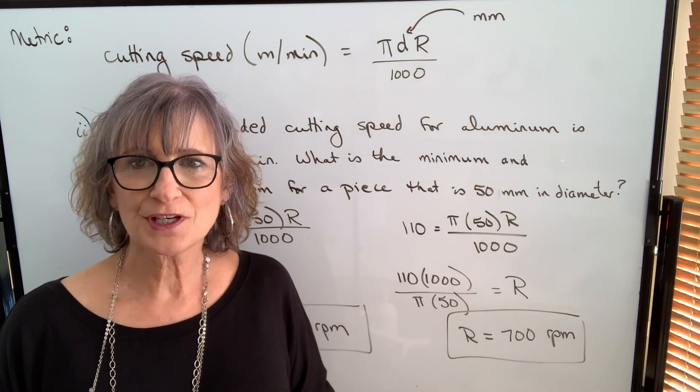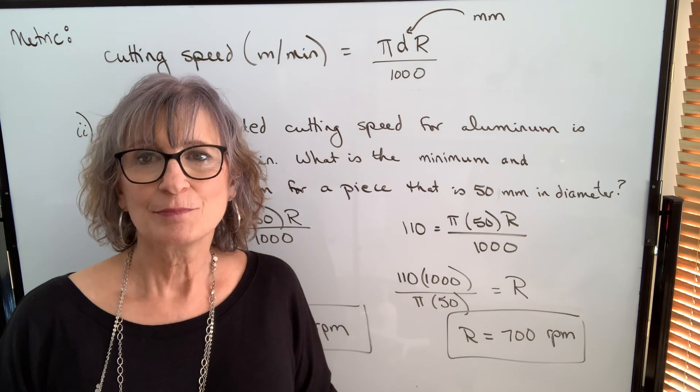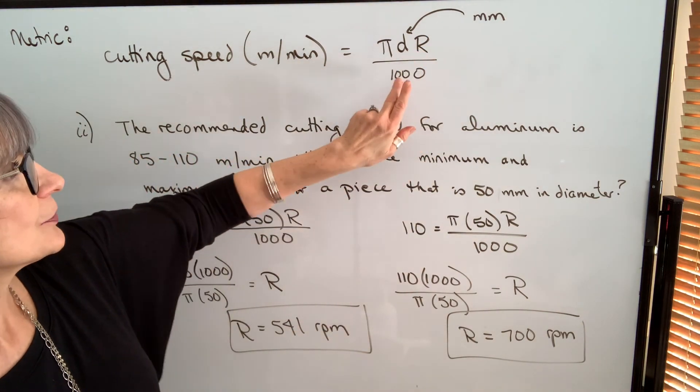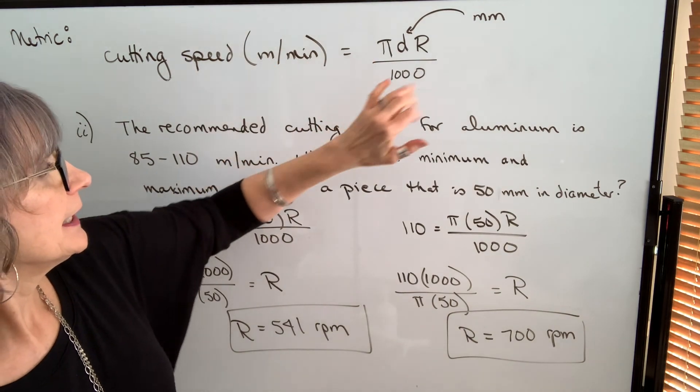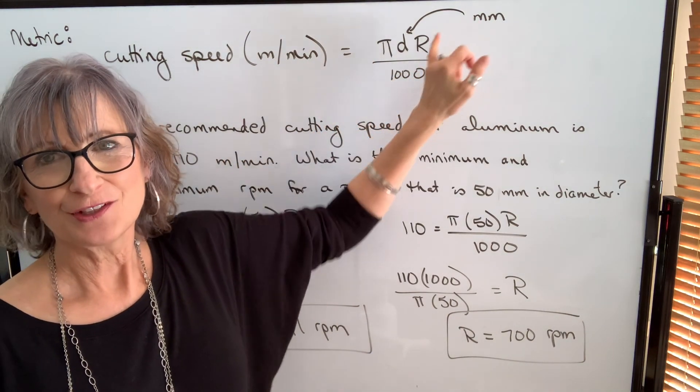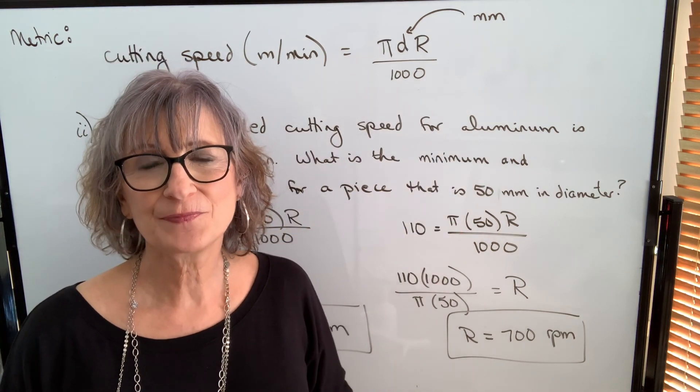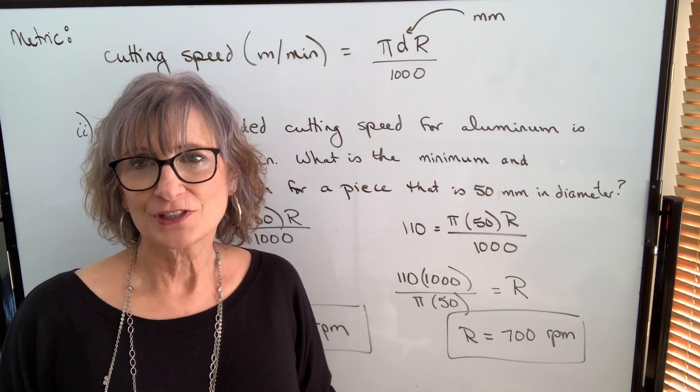The biggest thing to watch with cutting speed is your units, making sure your diameter, if it's metric, is in millimeters so that this formula works and gives you meters per minute. If it's another unit, then you're not going to use 1,000 to change it to meters. So just be careful of that.